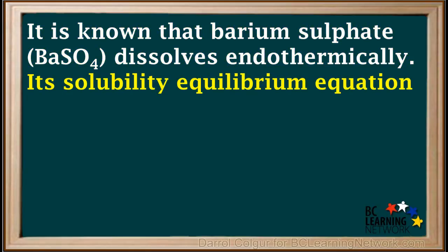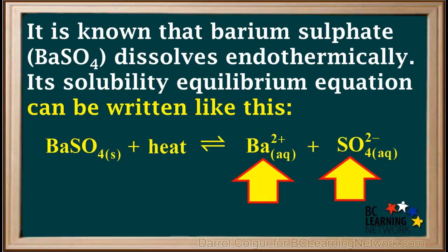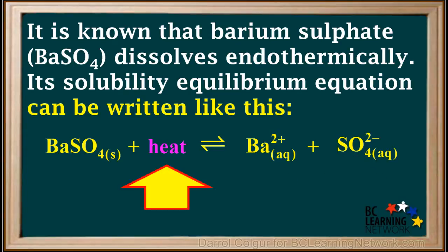Its solubility equilibrium equation can be written like this, with solid BaSO₄ on the left and the dissolved ions on the right. And because it's endothermic and heat is being consumed, the heat term is written on the left side of the arrow.